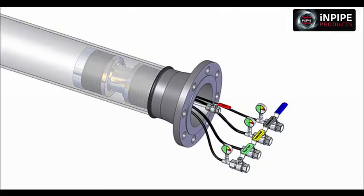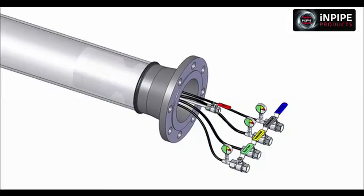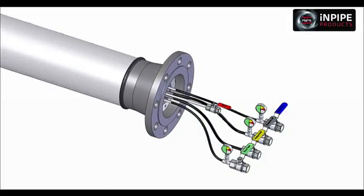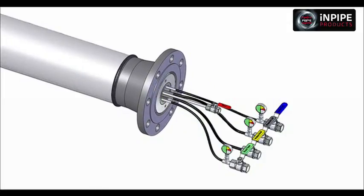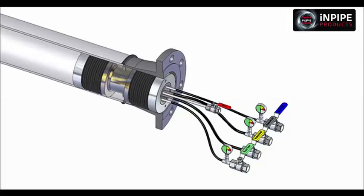Once the weld has cooled, the plug can perform its secondary purpose: testing the new weld. The plug is positioned with the weld between the center cavity and is reinstalled in the same manner as previously described.